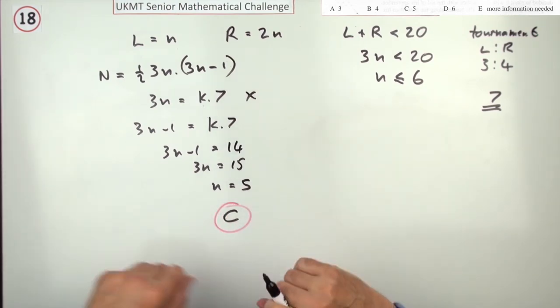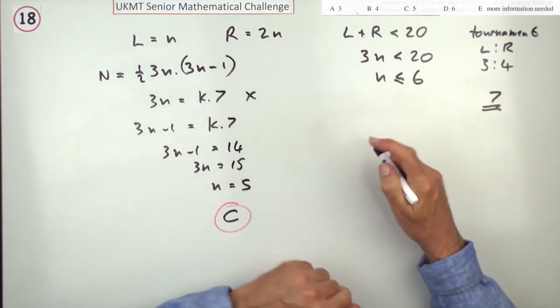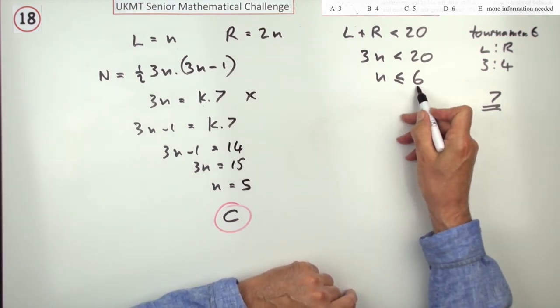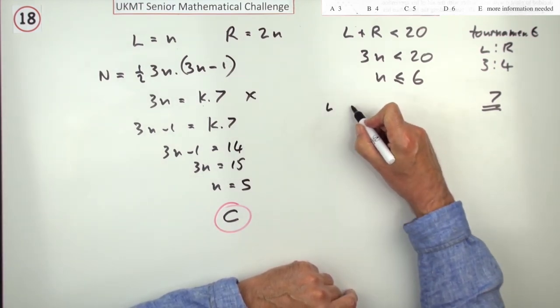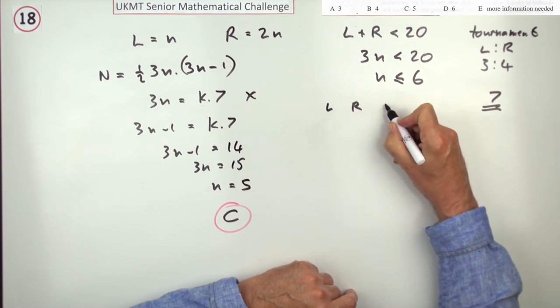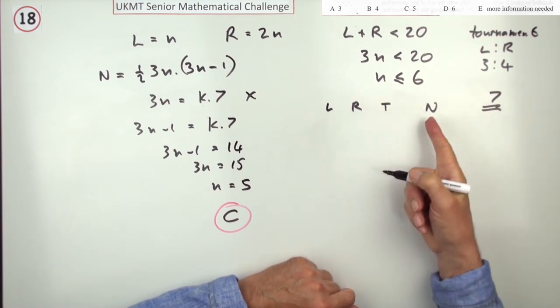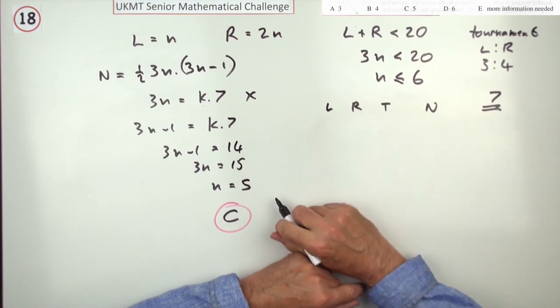Now instead of going through that algebra there, well there wasn't much, you could have just listed them. Since N has to be less than or equal to 6, you could have said how many left-handed players are there, how many right-handed, so what's the total number of players, so what's the total number of matches, and the total number of matches must divide by 7.